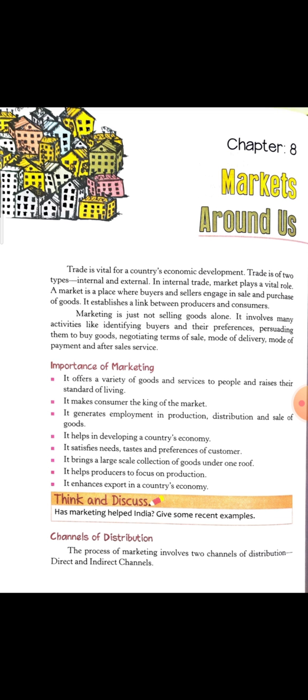Maine saman kharida, aaghe kisi aur ko sell kar diya, toh main consumer nahi hoon. Maine saman kharida, aur us saman ko khud use kiya, toh main buyer to hoon, but main consumer bhi hoon. Ab producer ka kya hai? Production karna. Producer ne production kar di. Ab woh kuch certain channels use karega saman ko sell karne ke liye, jis se saman ultimate consumer tak pohuch jaye.